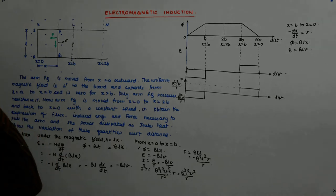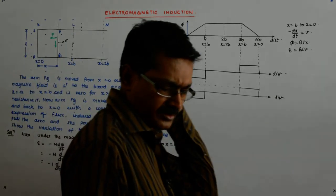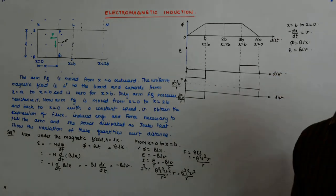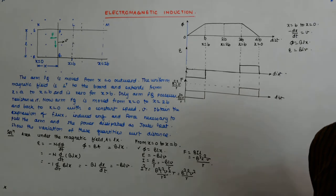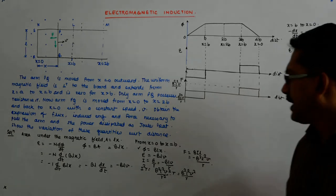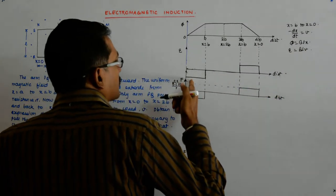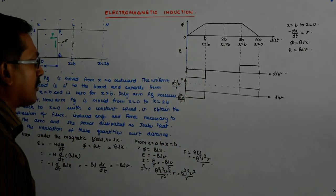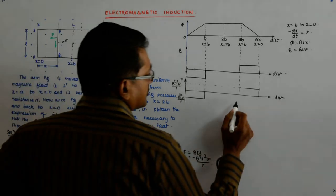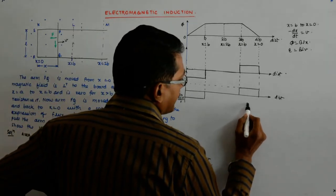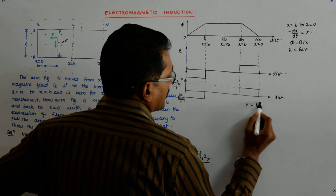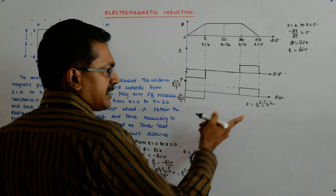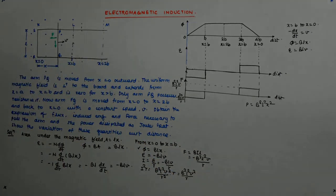Everything here is a constant. Try to think. b is a constant, l is a constant, v is a constant, r is a constant. Had you been finding out force with respect to l or v or whatever. Only when power versus x, suppose there would have been an x square term, then it would have become parabolic.